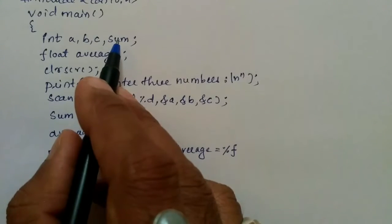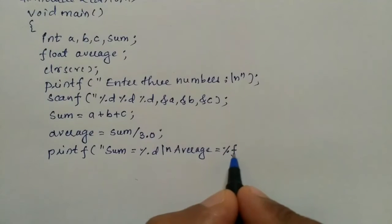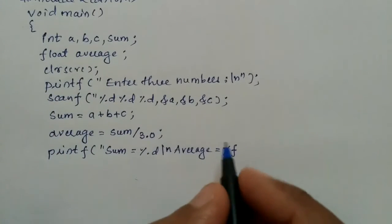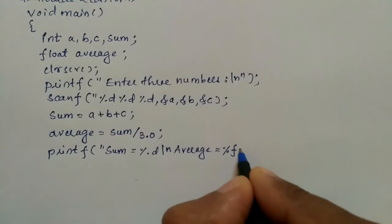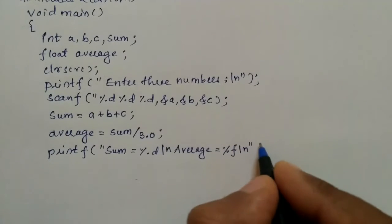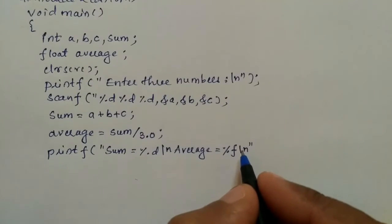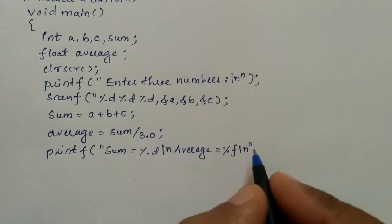Here %d is for integer because sum is type integer, and here I have written the format specifier %f to represent floating type of data because we want this average in terms of floating point number. This \n is used to display the result one below the other in proper format.